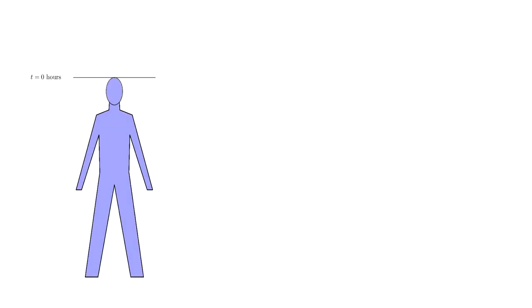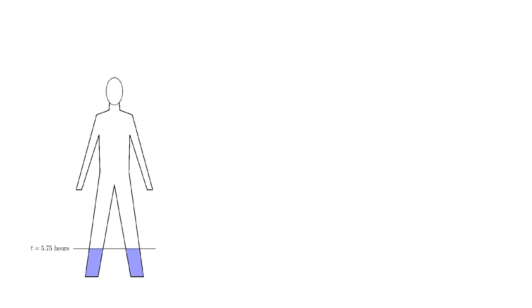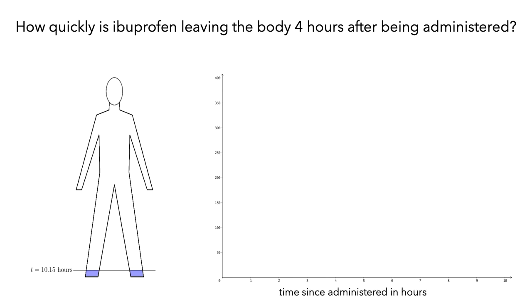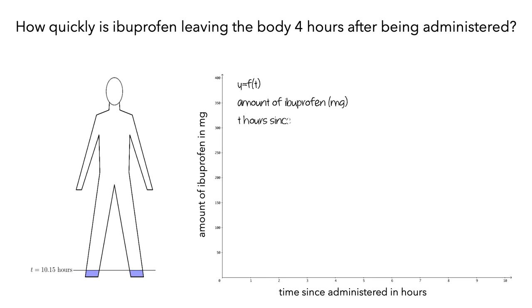Let's think about the scenario where a person takes 400 mg of ibuprofen. If we think about the ibuprofen leaving the body, we might want to know how quickly the ibuprofen is leaving the body exactly 4 hours later. We'll think about this scenario graphically, with the horizontal axis as elapsed time in hours since the ibuprofen is administered, and the vertical axis as the amount of ibuprofen in milligrams. We'll let y = f(t) be the amount of ibuprofen in milligrams t hours since taking the pills.